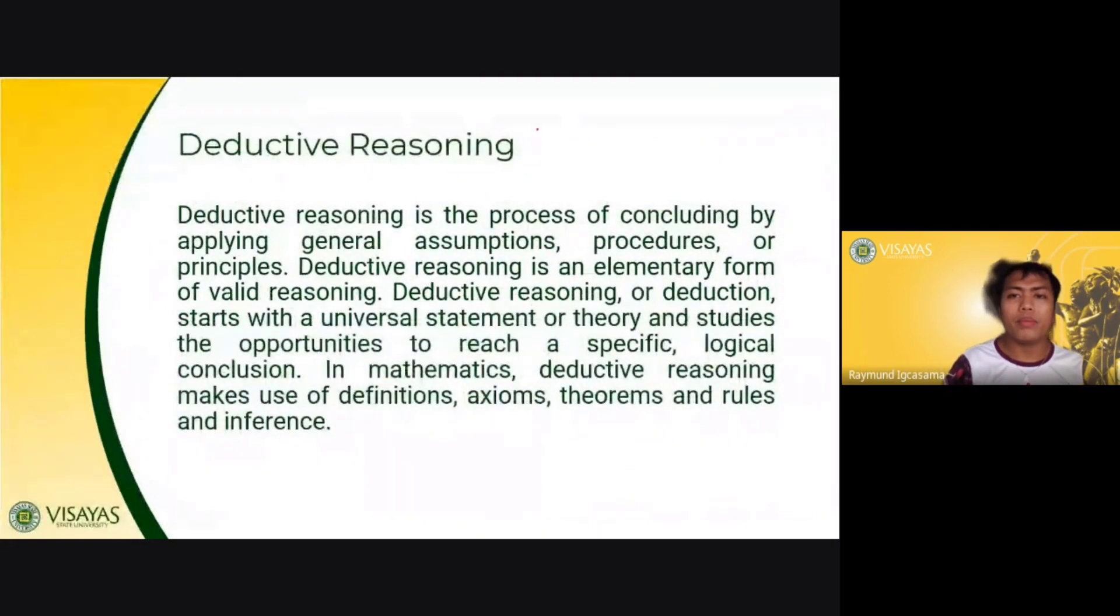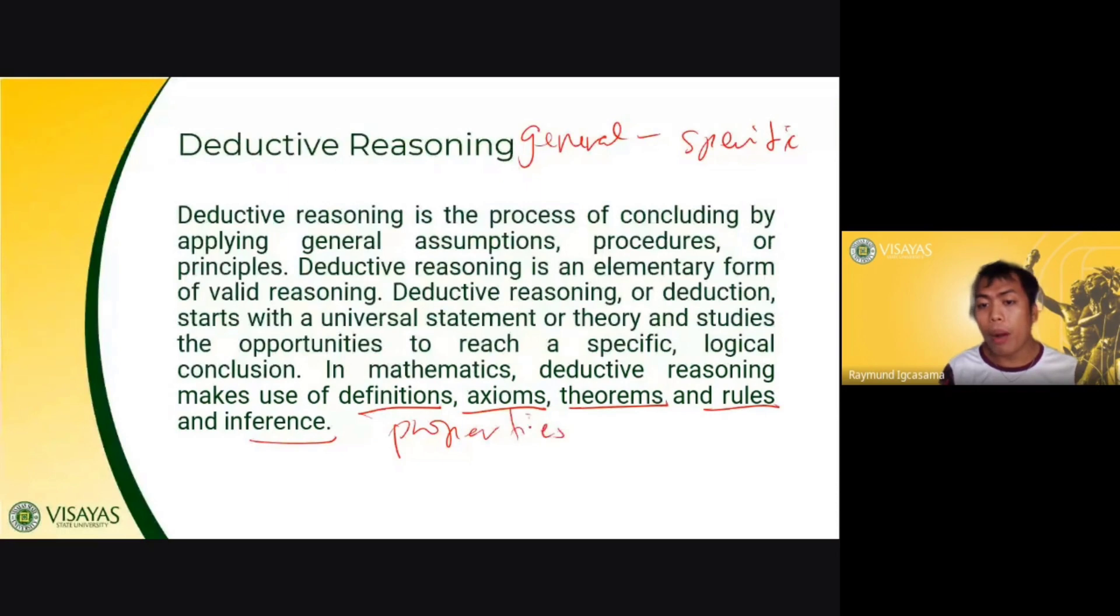Deductive reasoning is a process of concluding by applying general assumptions or procedures or principles, usually using definitions, axioms, theorems, rules, inference, and even properties. Properties of a triangle. Properties of a square. So it's very important that you know the basic properties or the basic rule or theorems in mathematics. Most cases, usually, this is used first. So this is used first to prove an argument.